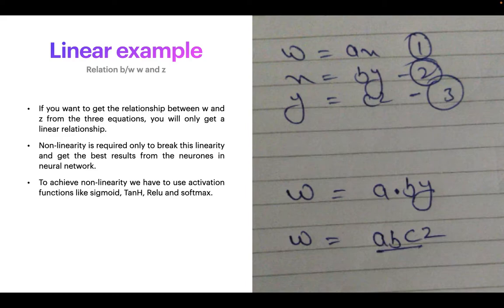The problem statement is we want to write w in terms of z, or describe a relationship between w and z. We can replace x by by and y by cz. When I replace those substitutes, I get w equals a times b times c times z. Here a, b, and c are constants, so I can name them as a different variable d, then w equals dz.